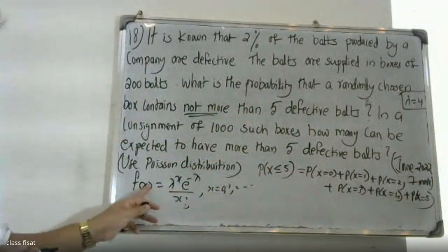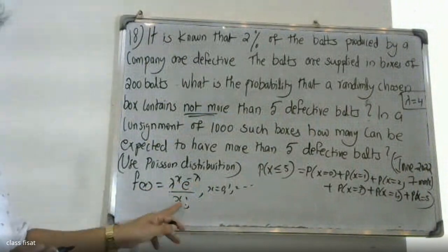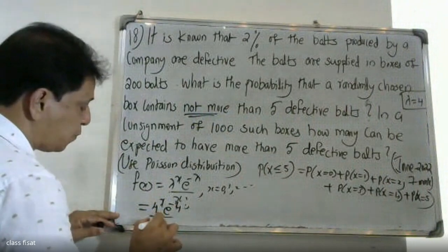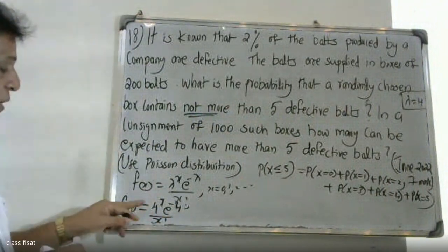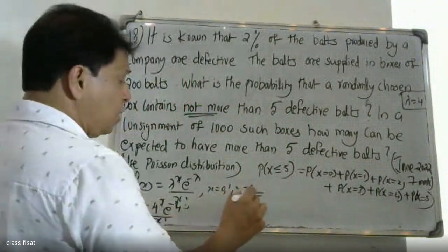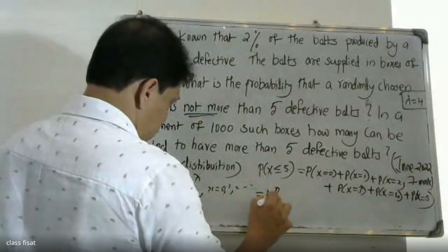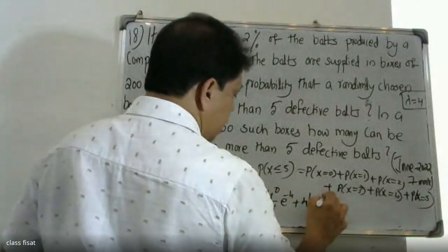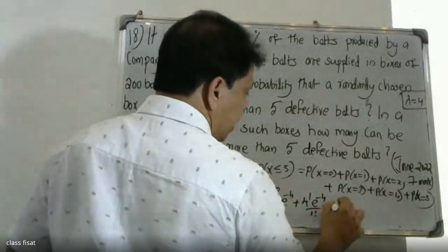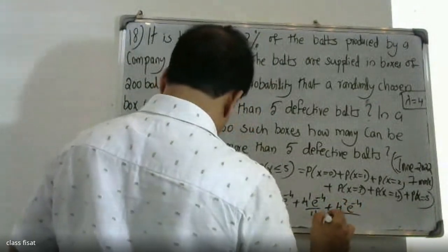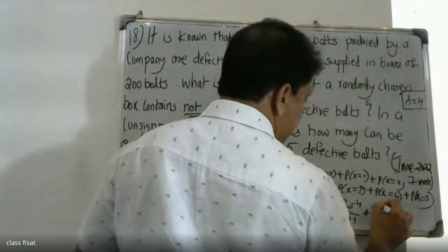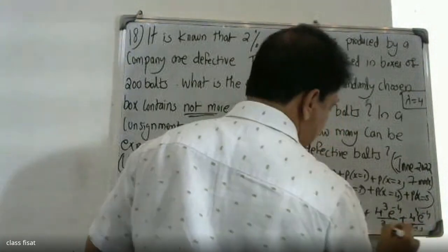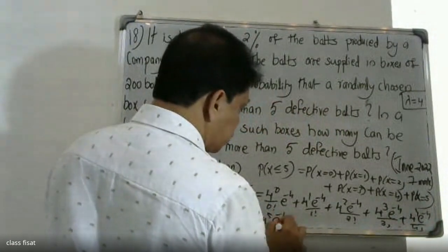Using the Poisson probability distribution function f(x) = (lambda^x × e^(-lambda)) / x!, with lambda equal to 4, we compute: (4^0 × e^(-4))/0! + (4^1 × e^(-4))/1! + (4^2 × e^(-4))/2! + (4^3 × e^(-4))/3! + (4^4 × e^(-4))/4! + (4^5 × e^(-4))/5!.